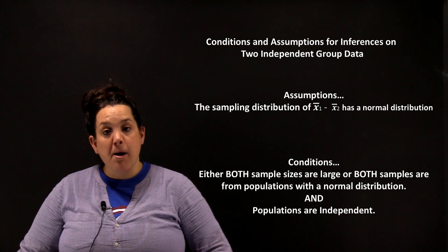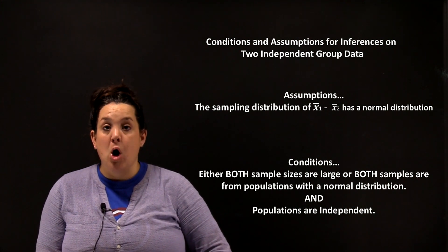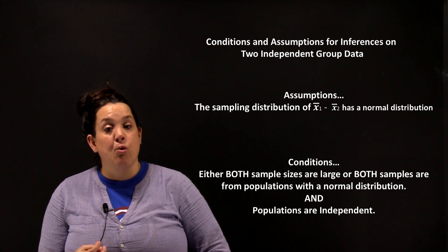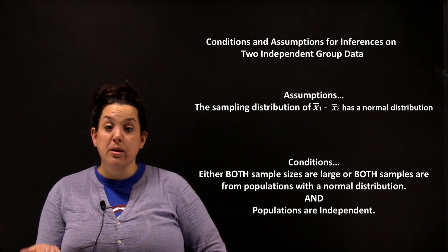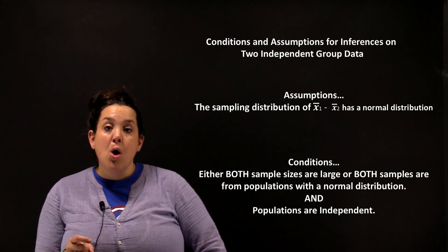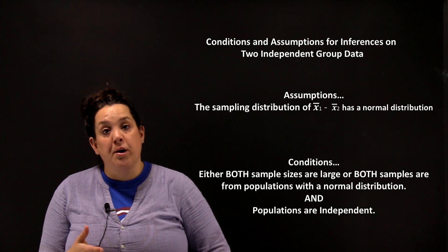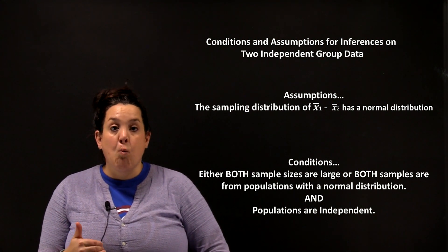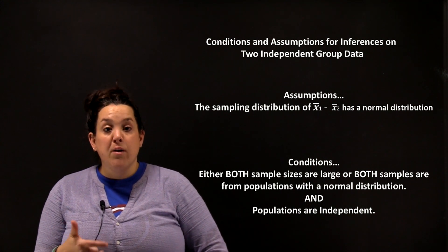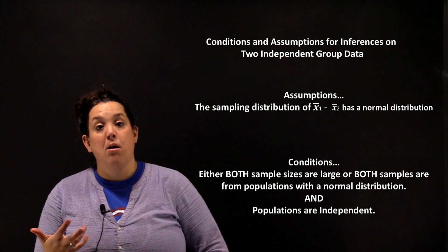For these problems, we're going to say that either both samples have to be large, or both samples have to come from populations that are normally distributed. In addition, because of the type of data, we also have to be able to verify that the populations are independent of one another — essentially meaning that one group's measurements isn't going to affect the other. If we can verify these conditions, then we know that those assumptions are valid.